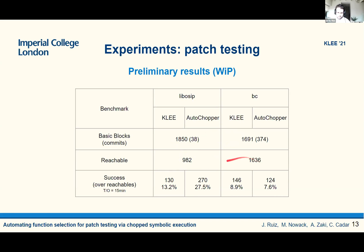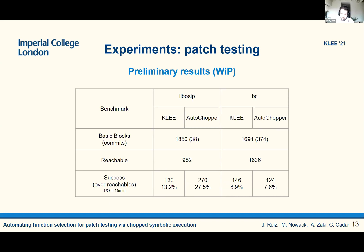Running both approaches on Liborsip, we get 13% success with KLEE and double that on AutoChopper, so we have increased coverage. On BC, however, because of various engineering issues but also because AutoChopper struggles to find a good list of functions to skip, KLEE is actually performing slightly better than AutoChopper.